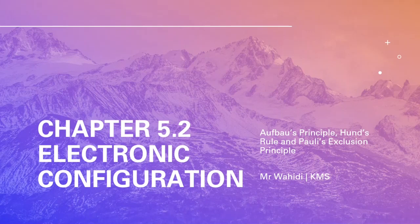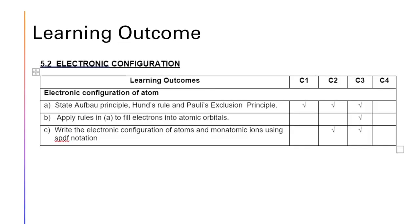Hello and assalamualaikum to all. Today we are going to proceed to chapter 5.2: electronic configuration. The learning outcomes today are: we are going to study about the Aufbau principle, Hund's rule, and Pauli exclusion principle. We will use all this information to fill electrons in atomic orbitals, and at the end of the lesson you should be able to write using spdf notation for the electronic configuration of atoms.